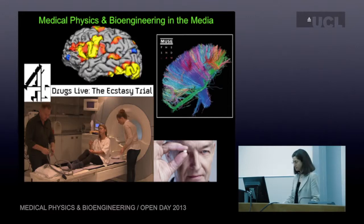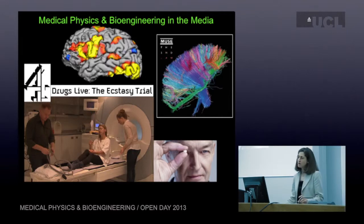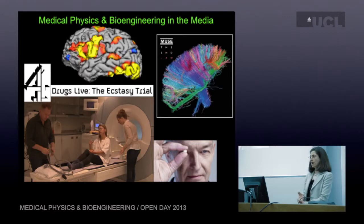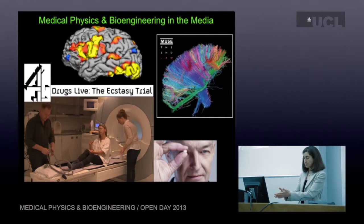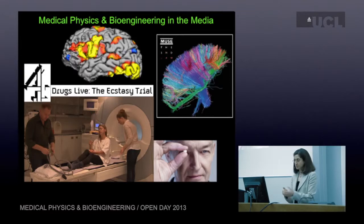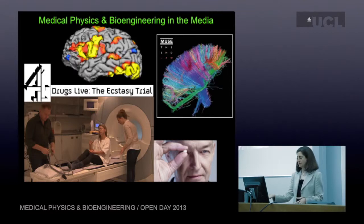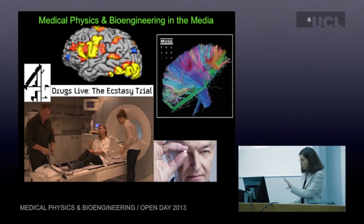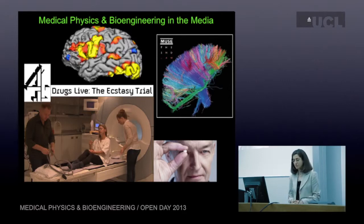This diffusion tensor image was actually on billboards around London last year. Some of you might have also seen this television series where people were given a drug while inside an MRI scanner — one of them receiving a placebo. This was a real scientific study to see if the drug might have potential for treating post-traumatic stress disorder. All these images were produced using MRI and medical physics and bioengineering techniques.